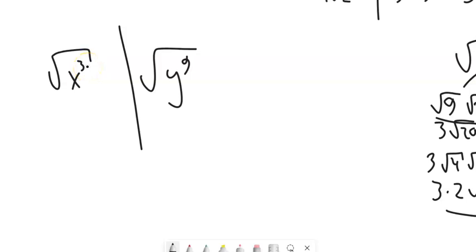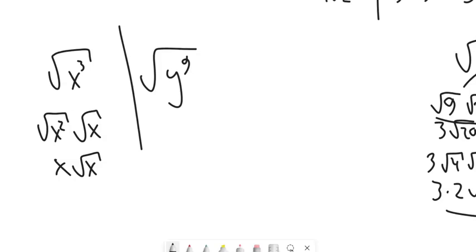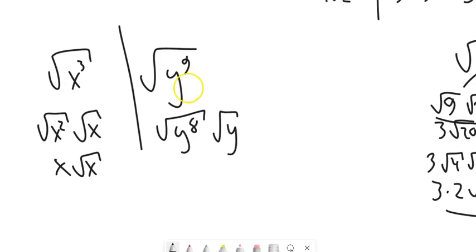Square root of x cubed: if the exponent is even I can just cut it in half, but here I'll write this as x squared times x. Square root of x squared is x, so this is x root x. For the square root of y to the 9th, write it as y to the 8th times y. That gives y to the 4th times the square root of y.